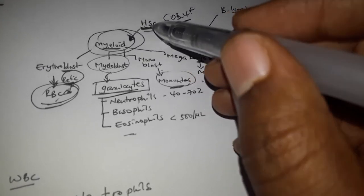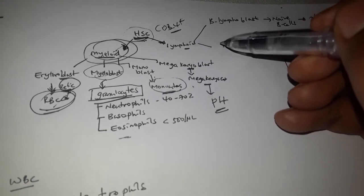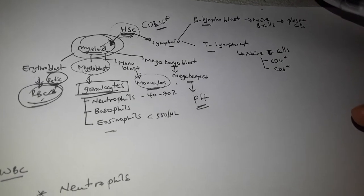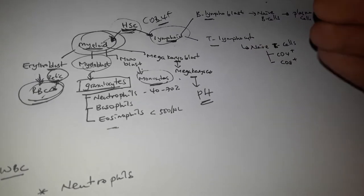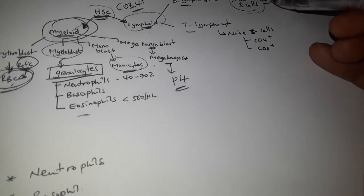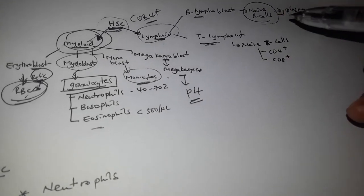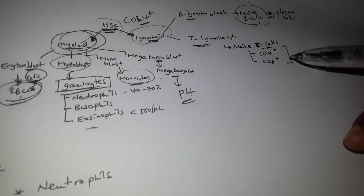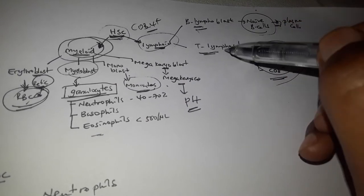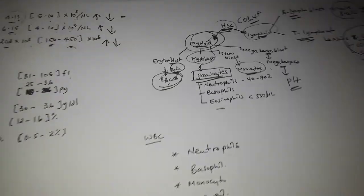The hematopoietic stem cell can also differentiate into the lymphoid lineage, giving rise to T-lymphocyte cells and other lymphocyte cells.